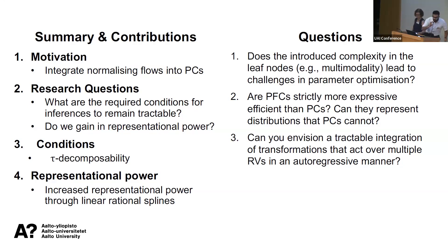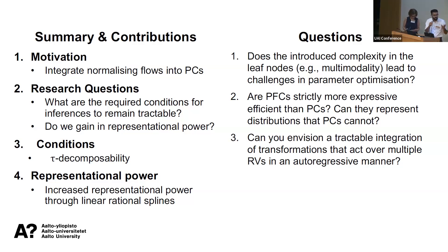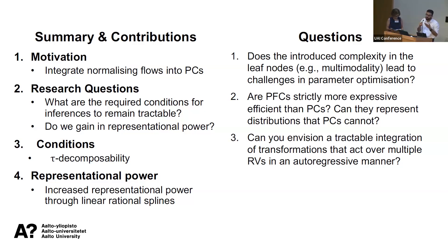The audience question: did we experiment with other types of rational splines? In the flow literature there are linear rational splines, quadratic rational splines, cubic splines, and so on. We did experiment with both linear and quadratic rational splines, but there was no added expressive power with quadratic over linear splines — we observed the same performance with both, so we use the less computationally expensive linear splines.